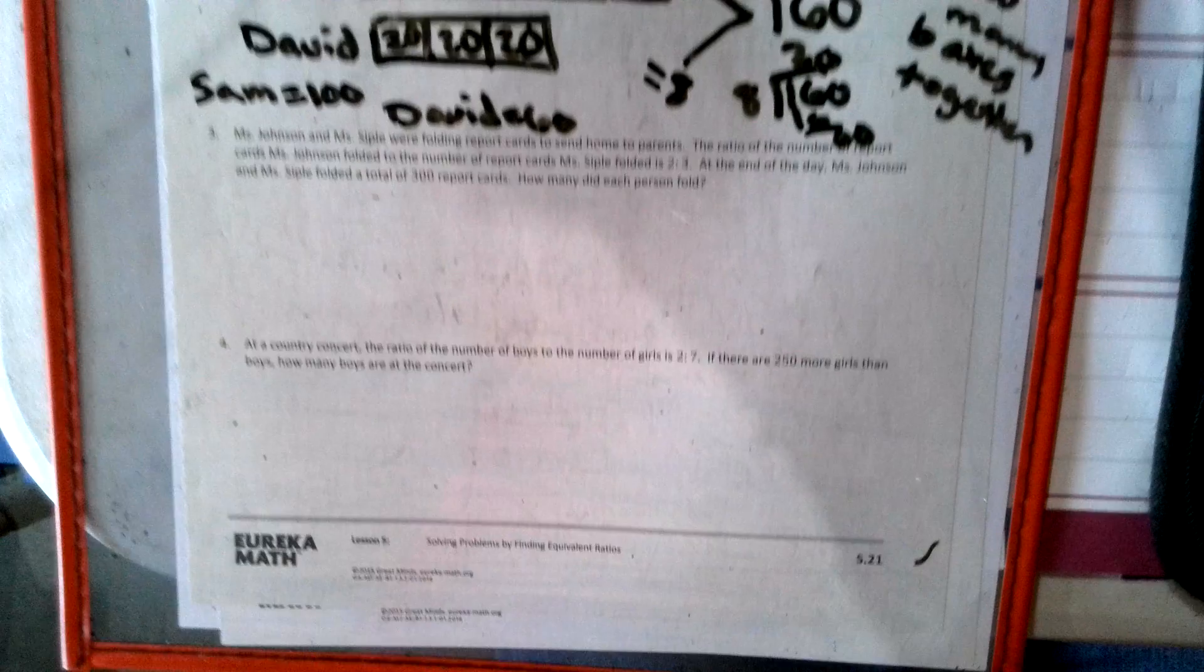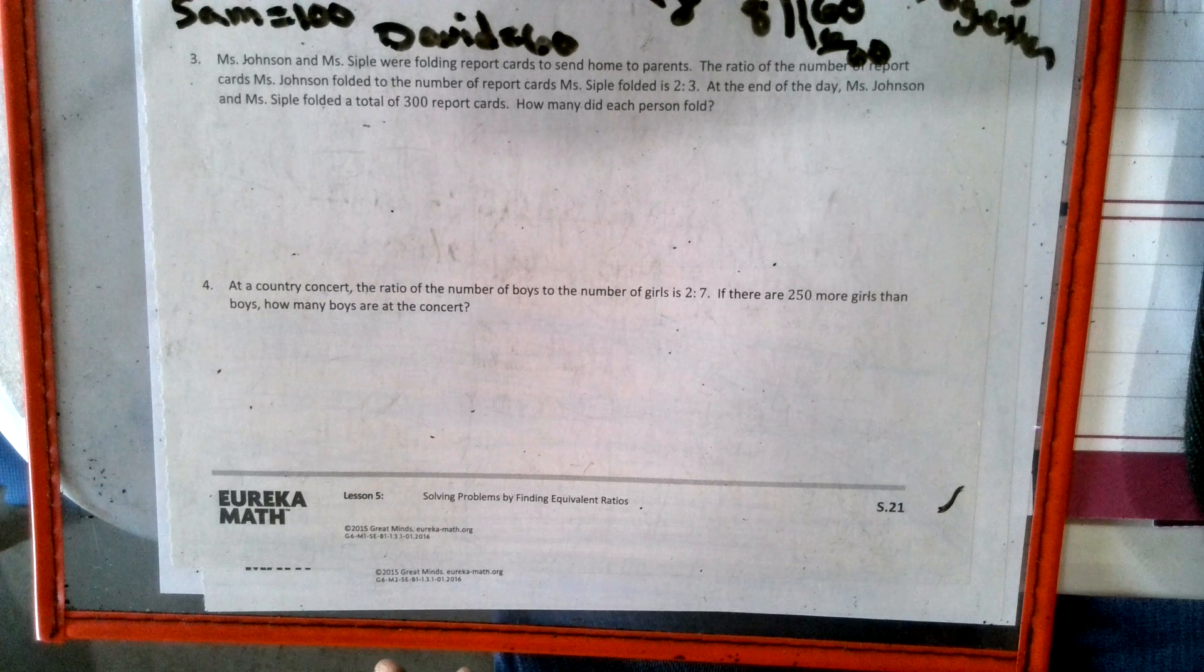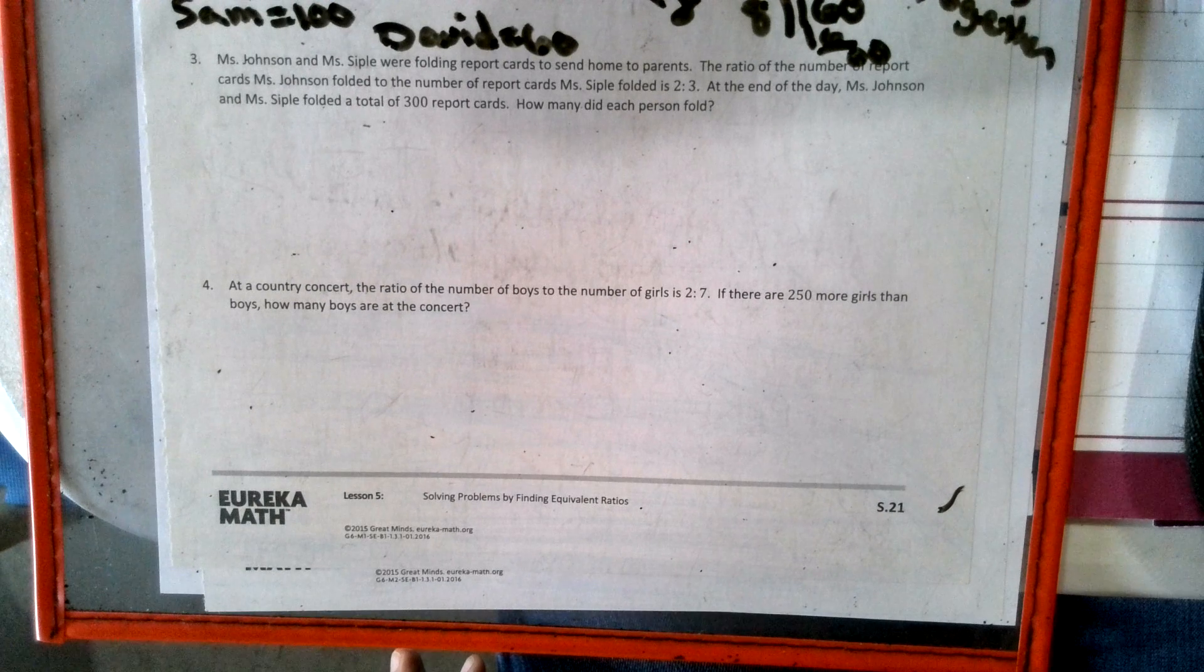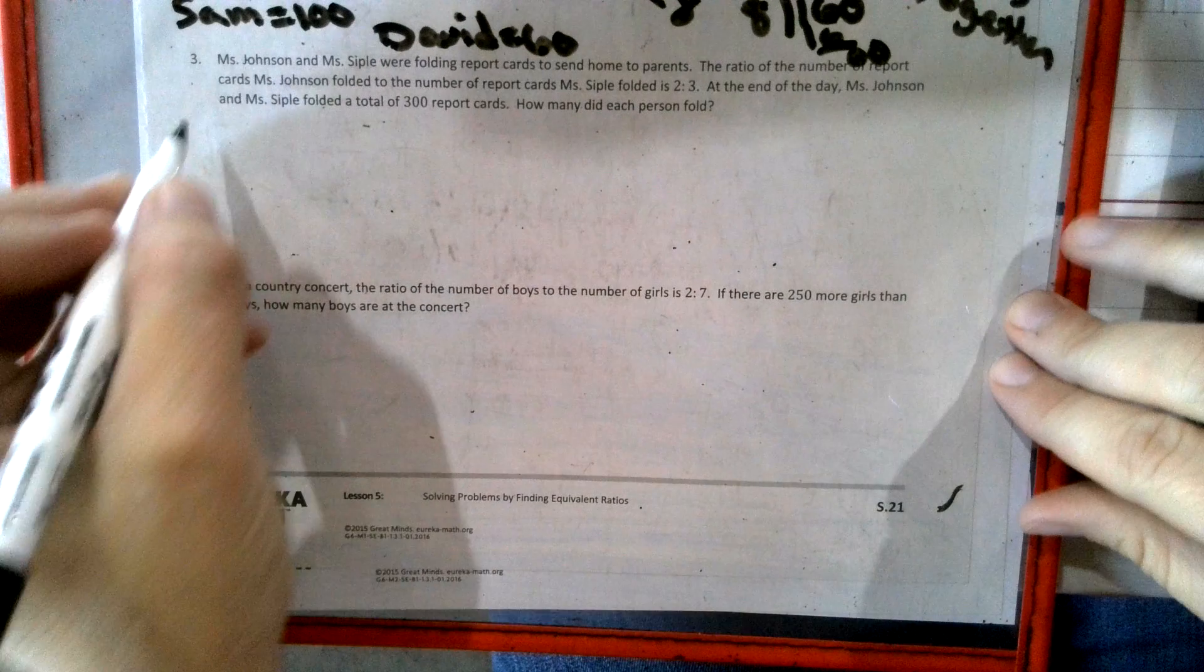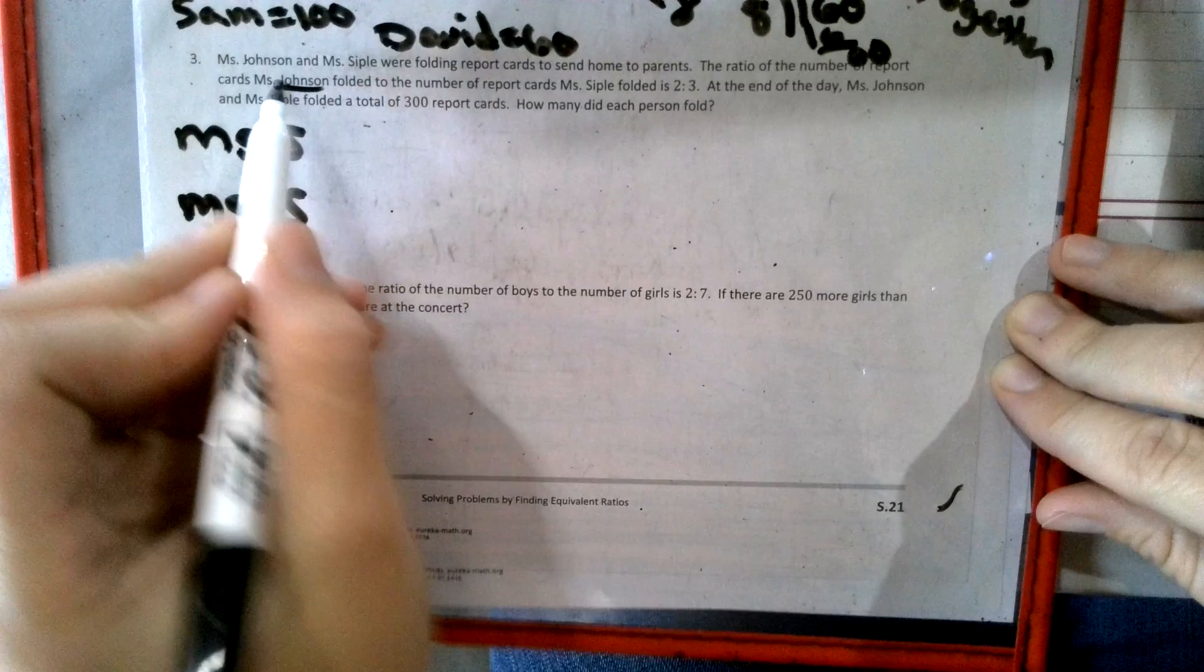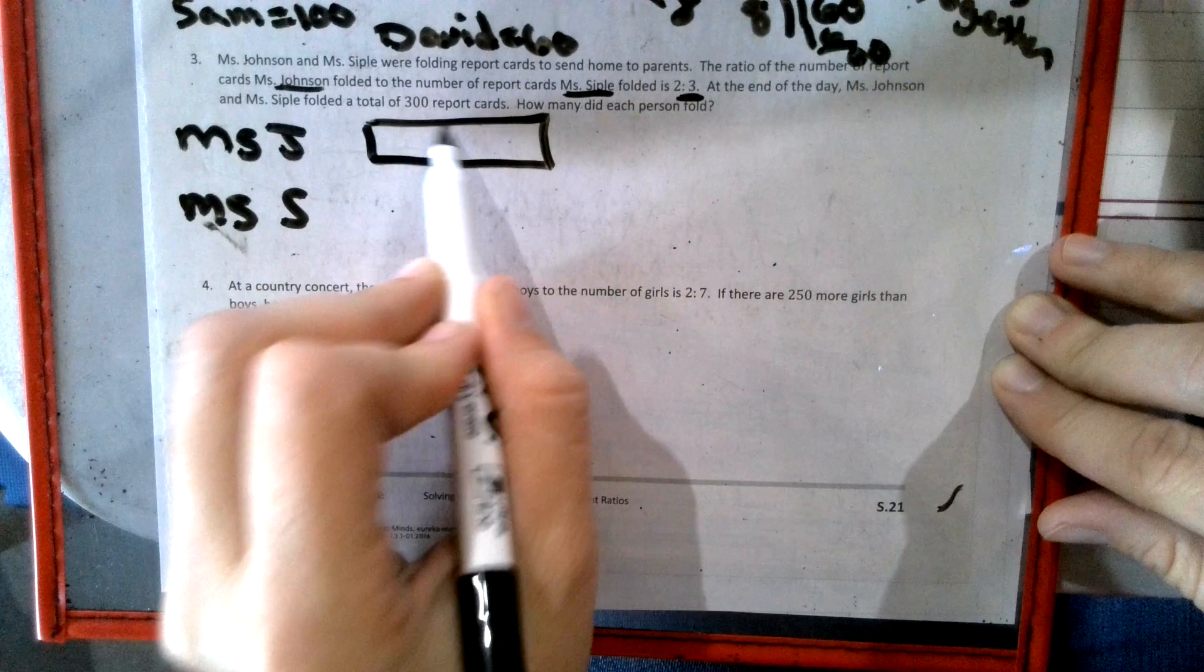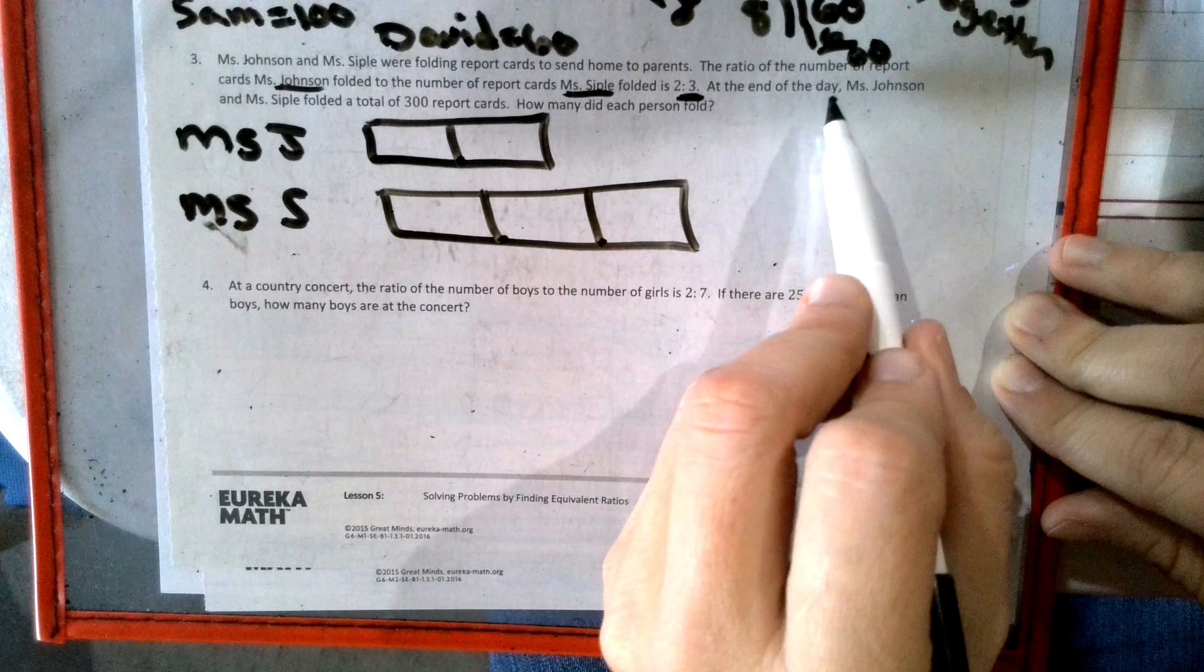We're going to go down to the next one. Miss Johnson and Miss Sipple were folding report cards to send home to parents. The ratio of the number of report cards Miss Johnson folded to the number of report cards Miss Sipple folded was two to three. So we're going to put Miss J and Miss S. So it says the ratio of the number of Miss Johnson to Sipple was two to three. So Johnson was listed first, and she gets two boxes, and Sipple gets three boxes.